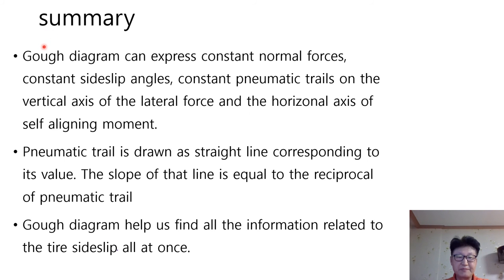Here we have the summary. A GO diagram can express constant normal forces, constant side-slip angles, constant pneumatic trails on the vertical axis of the lateral force and the horizontal axis of self-aligning moment. A pneumatic trail is drawn as straight line corresponding to its value. The slope of that line is equal to the reciprocal of a pneumatic trail. GO diagram helps us find all the information related to the tire-side slip all at once.